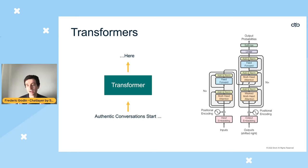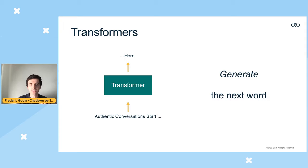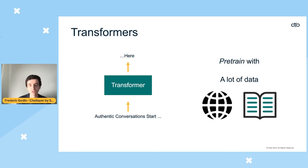The transformer architecture is used to generate the next word in a sentence. For example, starting with 'authentic conversation start,' we train the transformer to predict the next word. We do this with a huge amount of data — the GPT-3 team scraped the internet, scraped Wikipedia, and collected many books, all fed into this transformer model.